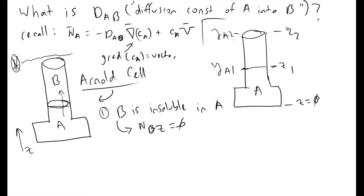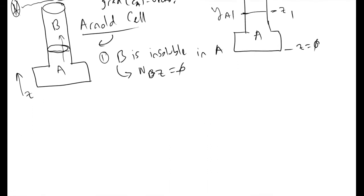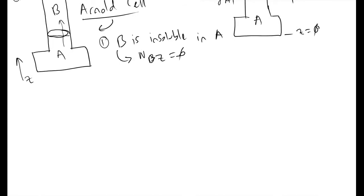The first thing we're going to do in our Arnold cell is apply the general mass transfer equation that we derived earlier. That tells us that the divergence of the flux vector plus the change in the concentration of A over time minus the rate of reaction of A must be equal to zero.